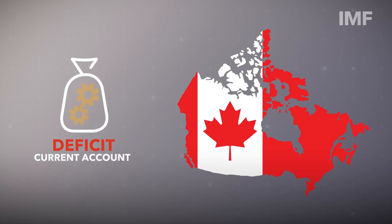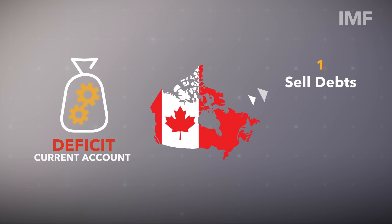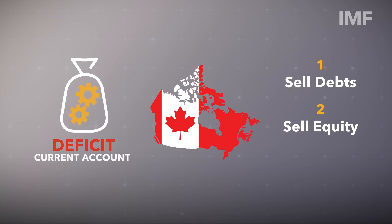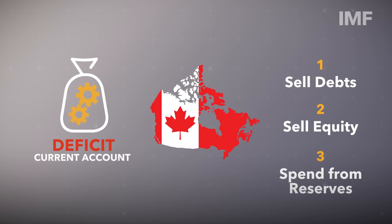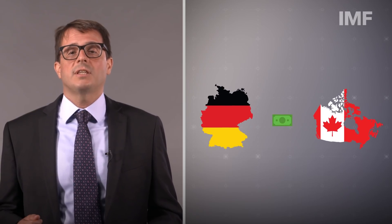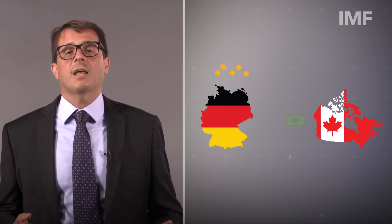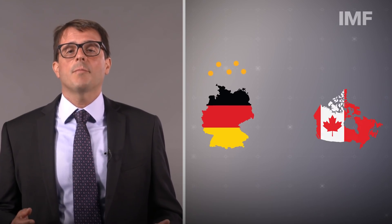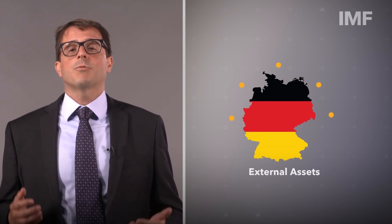Suppose Canada runs a current account deficit. Canada has a few options for how to do that. One, it can sell or issue more government or private sector debt that individuals or countries can buy. Two, Canada can get foreign direct investments in the form of shares in a public or private company — we call that equity. Or three, it can spend from its foreign exchange reserves. But if Canada is running a current account deficit, someone else is running a current account surplus — let's say that's Germany. In that case, Germany can use its savings to purchase the debt or equity that Canada is issuing, leading to a buildup of equity, foreign assets, or foreign exchange reserves for Germany.